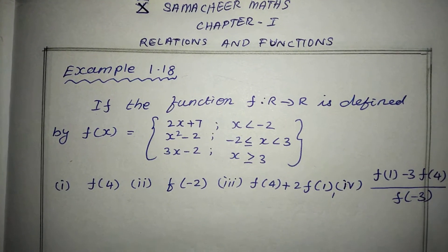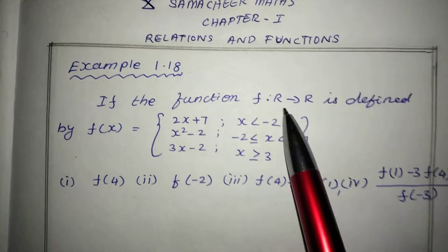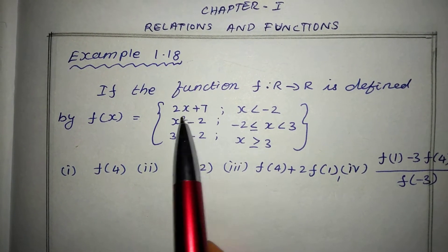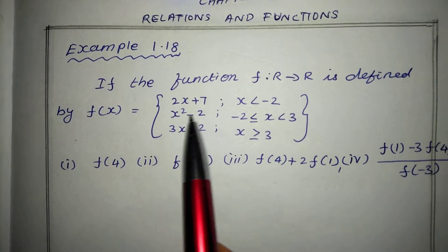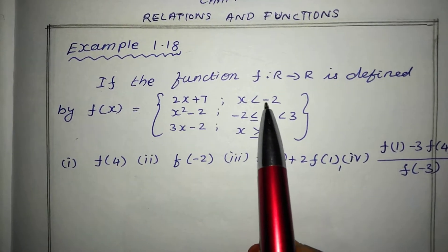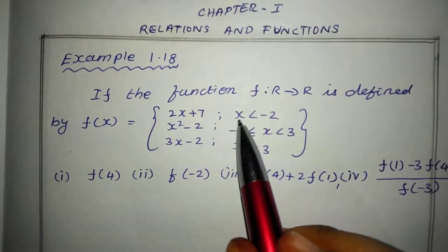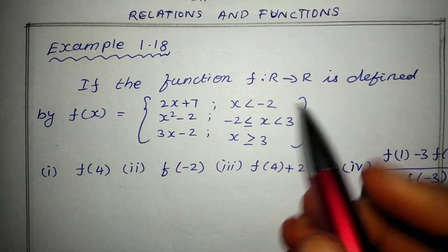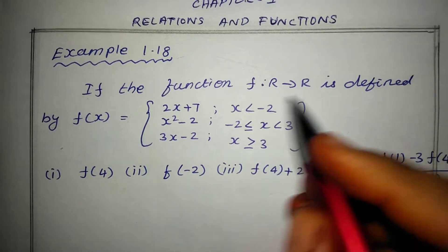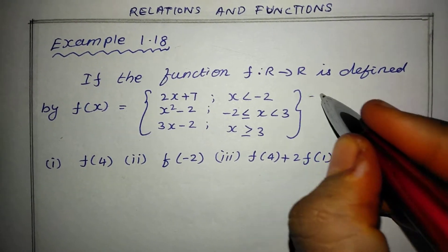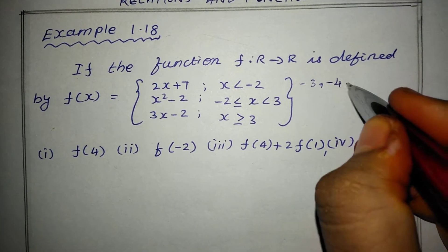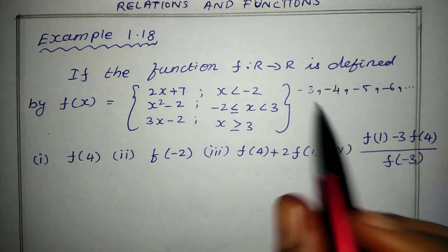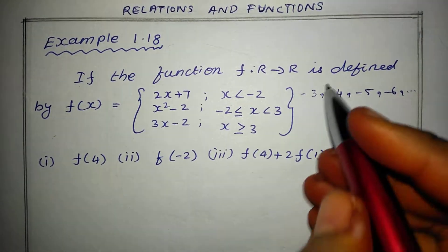Example 1.18: If the function f from R to R is defined by f(x) equal to 2x plus 7, where x is less than minus 2. That means x is less than minus 2, such as minus 2, minus 5, minus 6, and so on — all numbers less than minus 2.